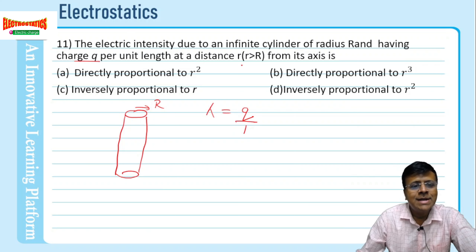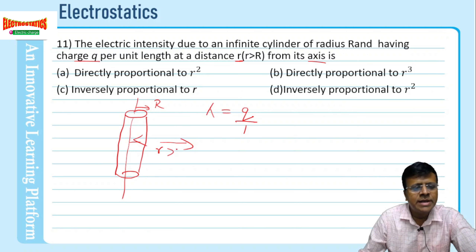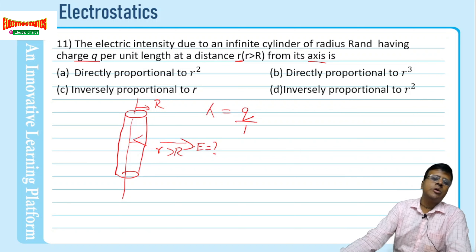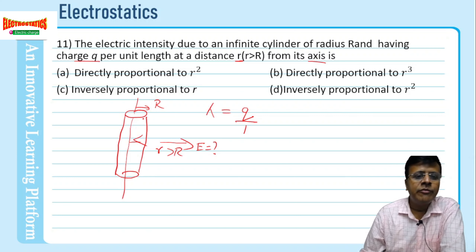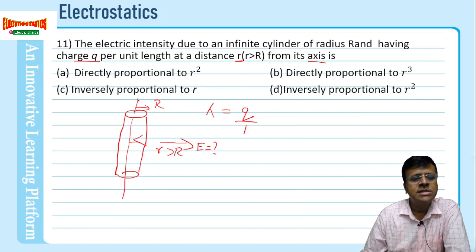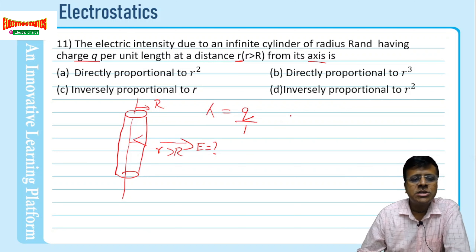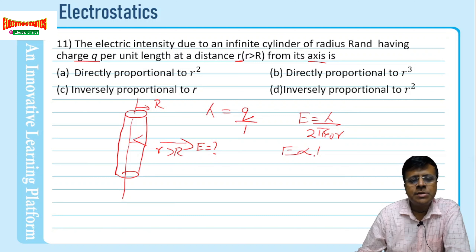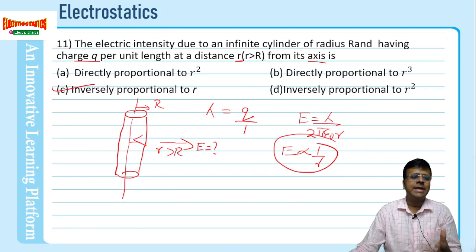At a distance of small r from its axis, where r is greater than R, what would be the value of the electric field at that point? There is no need to write any equations here, because you can assume that this infinite cylinder is like an infinite line charge. For an infinite line charge, we already know that the electric field is lambda divided by 2π ε₀ r. So you can see that it is inversely proportional to r.